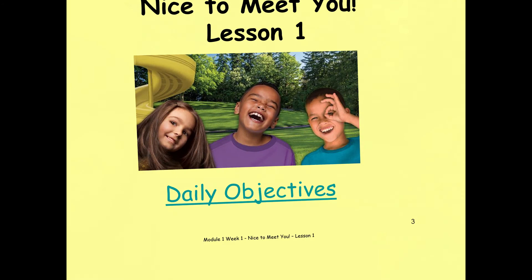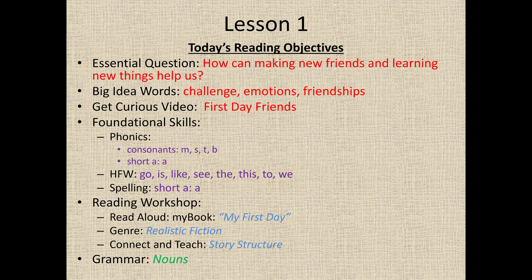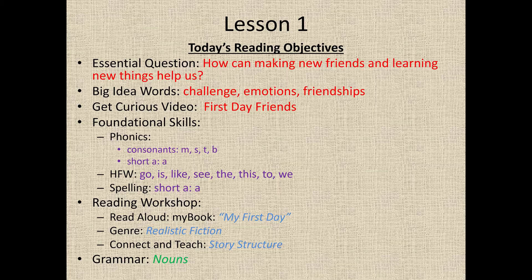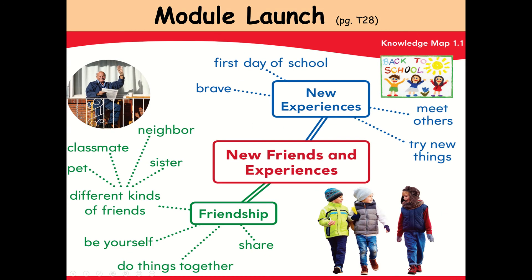I'm going to click on Lesson 1 and it's going to go to Lesson 1. Then I open up the daily objectives and go over the objectives that I'm going to teach my class for today, for this lesson. I get this from the Teacher's Edition. After I go over Lesson 1, I can skip through it, continue to Enter, or I can just hit Escape and go back to the main lesson.